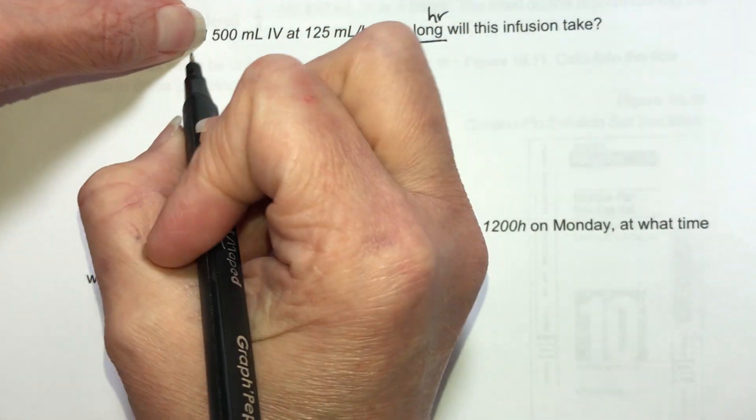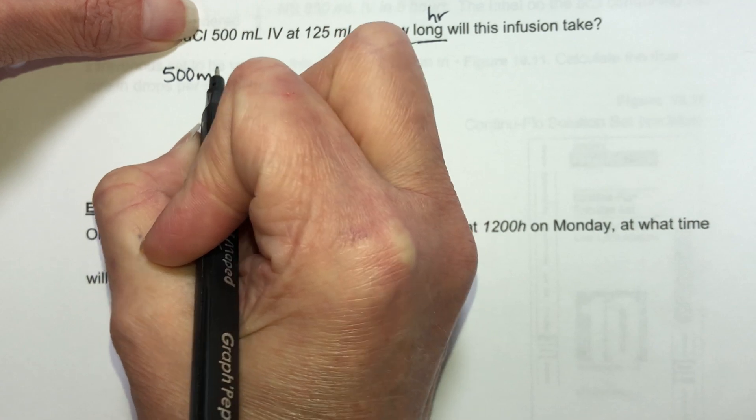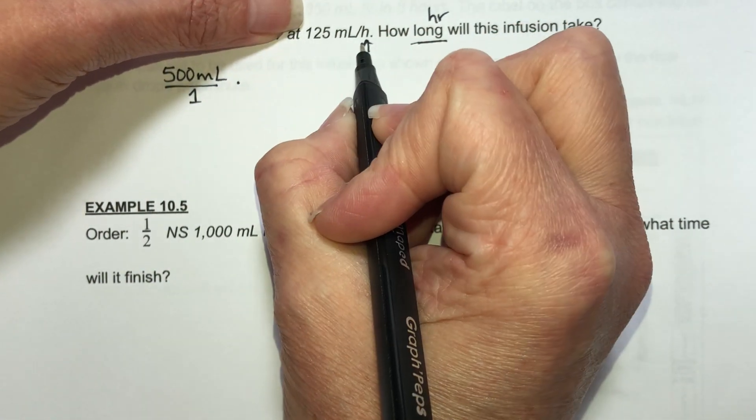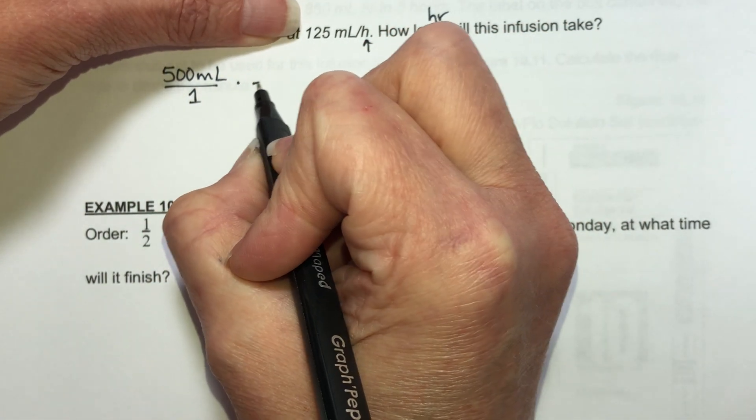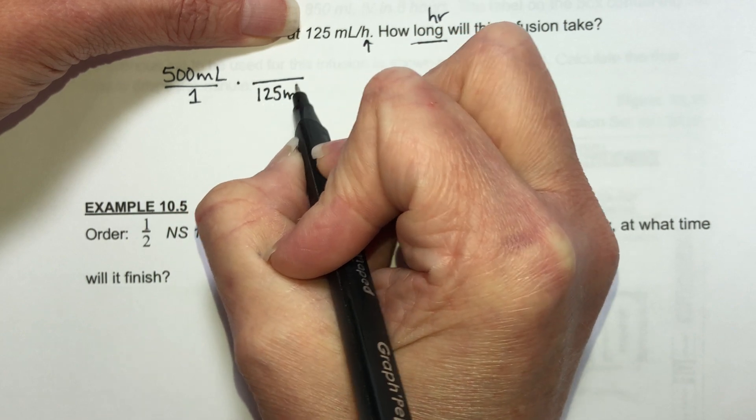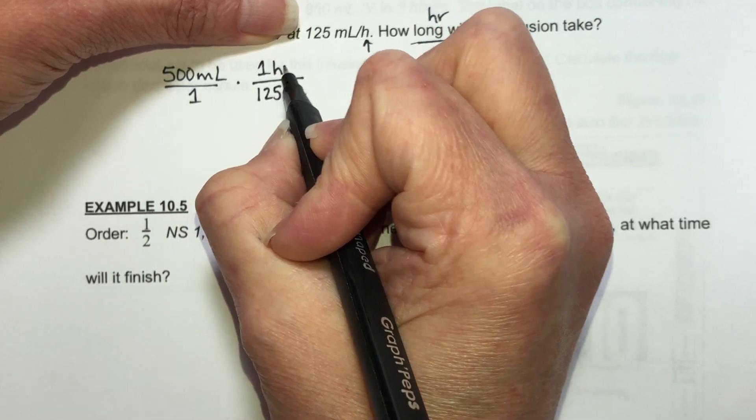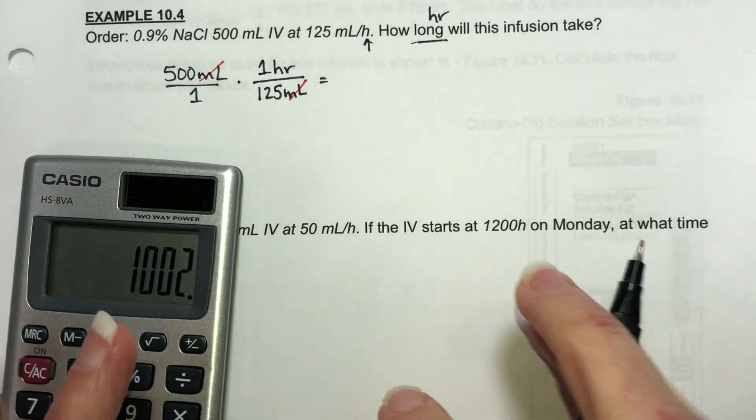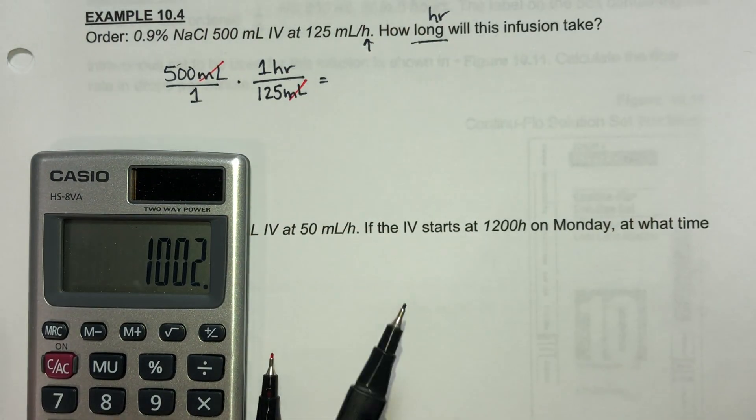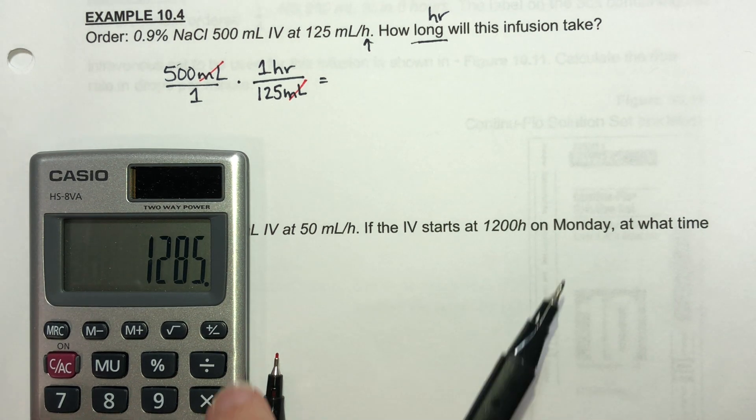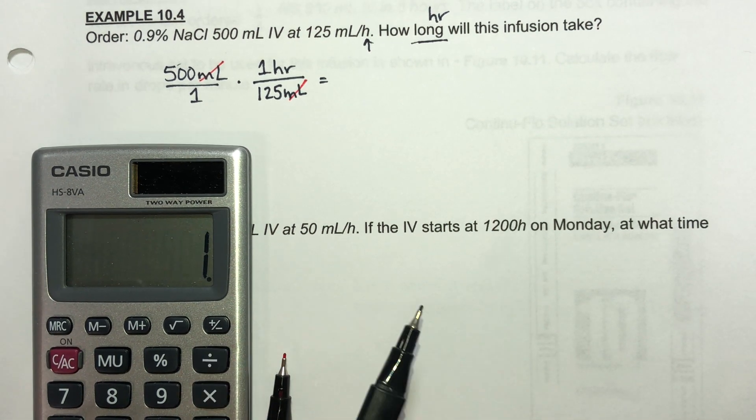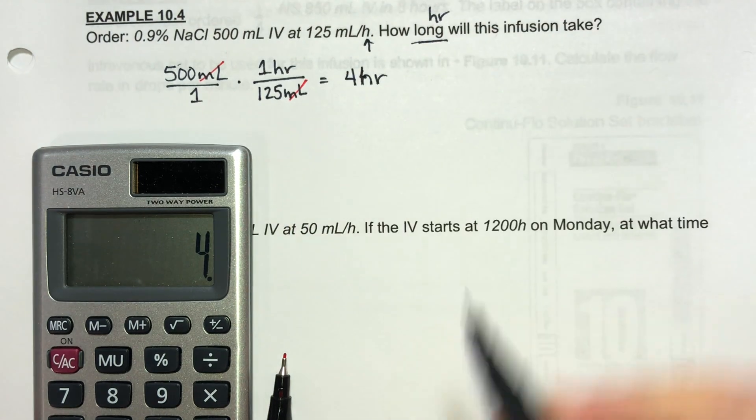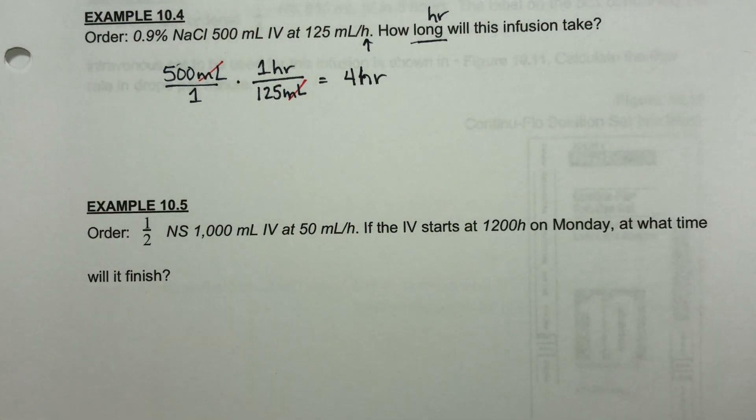We want to convert 500 milliliters into hours. We're going to use this relationship here. We're wanting to cancel out the milliliters so I'm going to put 125 milliliters in the bottom and 1 hour in the top. If you look on the diagonals milliliters cancel out. We're going to end up with hours and really we're going to end up with 500 divided by 125. And you get 4. So it will take four hours to do this infusion.